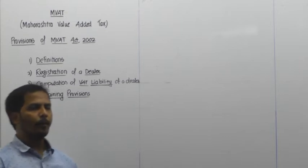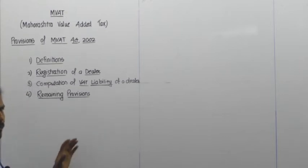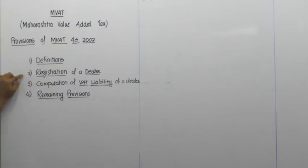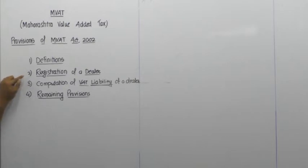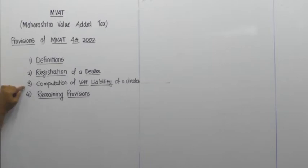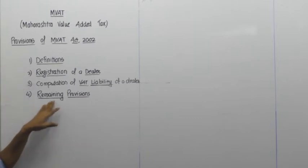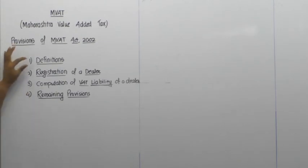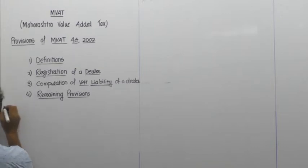Are you clear? Now today we are going to start. I will pick up the teaching order — generally I teach Registration first, then Definition, then Computation. This is because Registration has practical content, Definition has some theory, and then Computation again has practical. Remaining Provisions is hardly one or two lectures' work. More time will be spent on Registration and Computation. Let us start with Registration of Dealer.